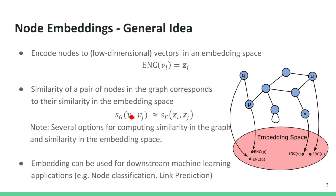A property we would like this encoder to have is that nodes that are similar in the graph are also similar in the embedding space, according to some chosen similarity measures. The similarity of two nodes in the graph is denoted here by SG, and the similarity in the embedding space is denoted by SE. There are several options for computing similarity in a graph and in the embedding space. The resulting embeddings can be used for downstream machine learning applications, such as node classification or link prediction.